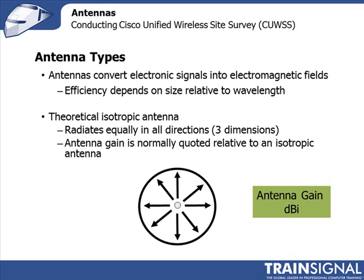When we talk about antenna gain we talk about dBi — decibels relative to isotropic. dBi is a ratio, and what we're expressing is the gain of an antenna relative to the isotropic antenna. The isotropic antenna becomes our baseline against which we judge all other antennas in terms of gain — the ability to push energy in one direction — and that is called dBi.